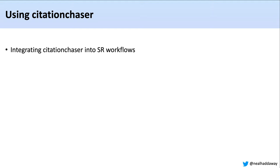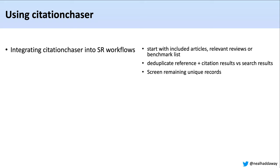We see people using Citation Chaser in a number of ways. They can integrate the tool into their systematic review or evidence synthesis workflow by starting with a set of included articles, relevant reviews, or a benchmark list. They can deduplicate their reference and citation chasing results against their initial search results from grey literature sources and bibliographic databases. Any unique results that remain can then be screened to find additional articles that are only found by citation chasing.